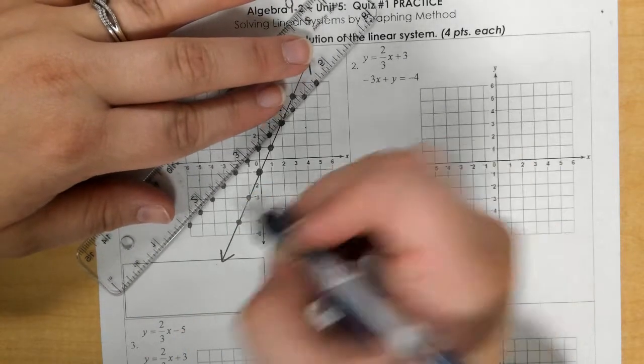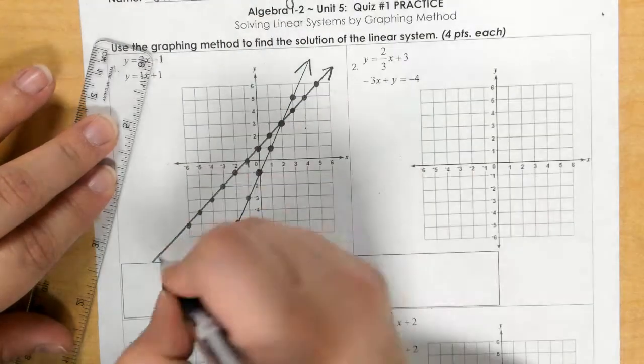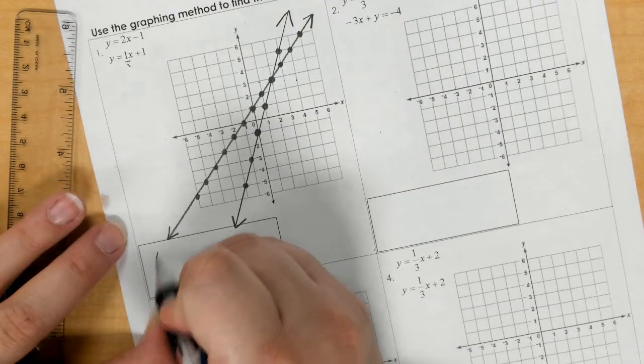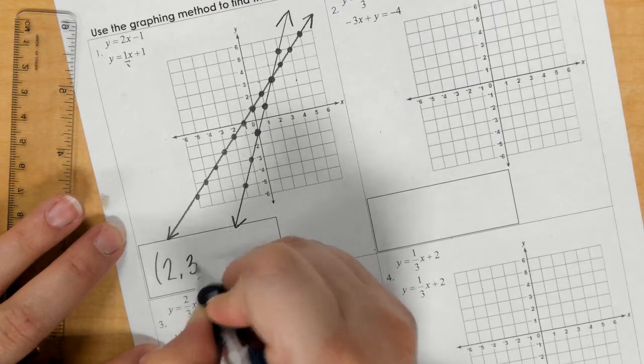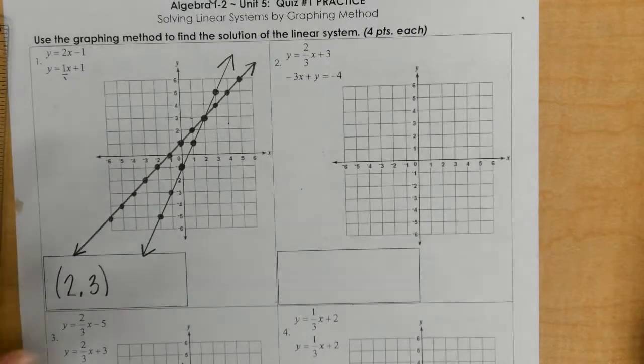We see that the two lines have one intersection point, which is at 2, 3. So at 2, 3, that is the point of intersection, which is considered one solution.